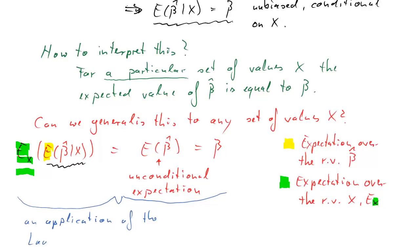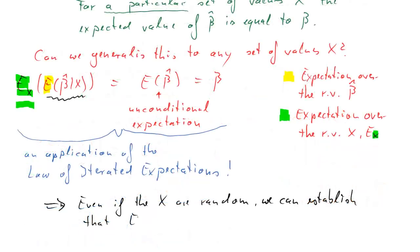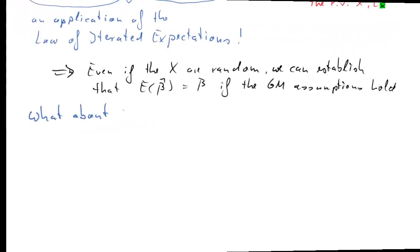What we have seen here is an application of what is called the law of iterated expectations. In this particular case, it's quite intuitive because we know the conditional expectation is equal to beta regardless of what x we have. Therefore, taking expectations over x results in beta again. So we have established that even if the x's are random, the unconditional expectation of beta hat is equal to beta — if the Gauss-Markov assumptions, or at least the first three, hold.